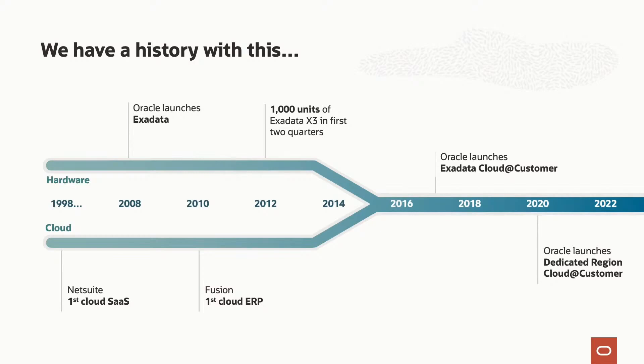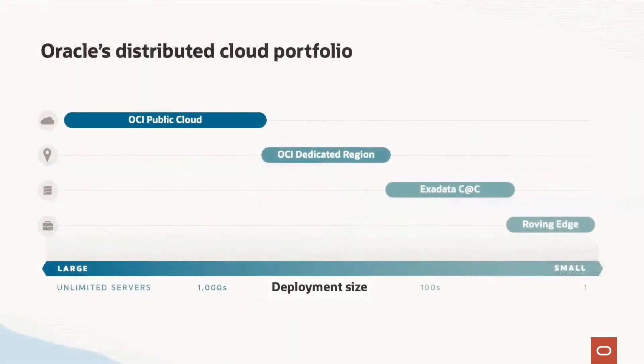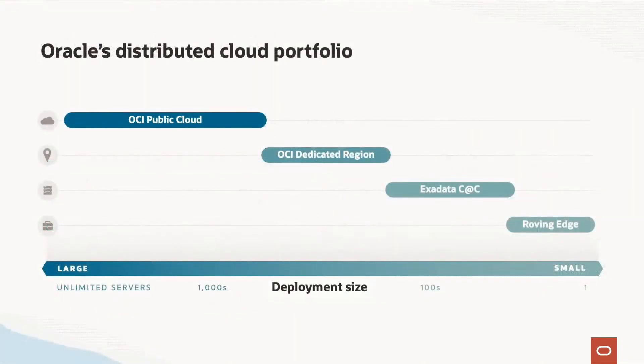And if you look back, say, five or six years ago, we really started to converge those two streams, bringing the cloud and the integrated hardware and software together to create something that just is unique in the industry and that other people haven't done before and hasn't been offered before. And when you put all of that stuff together, that's really what we consider our distributed cloud portfolio.